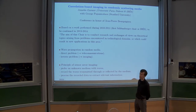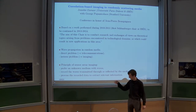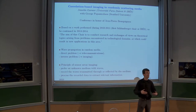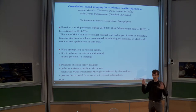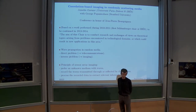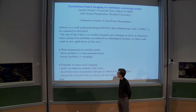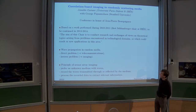Wave propagation in random media means we consider wave propagation in complex media. A complex medium can be the human body, the earth, or the atmosphere — it's a natural medium that we don't know. So we model it as a realization of a random process, hence the term random media.